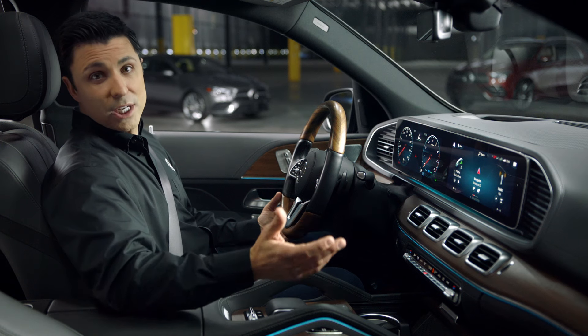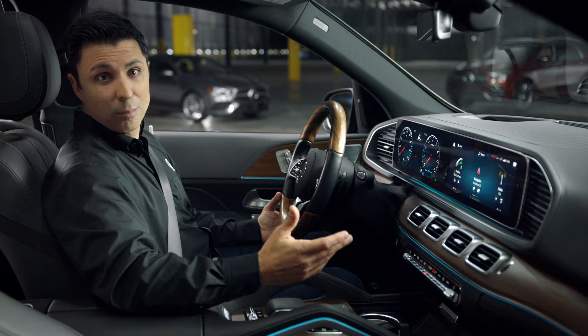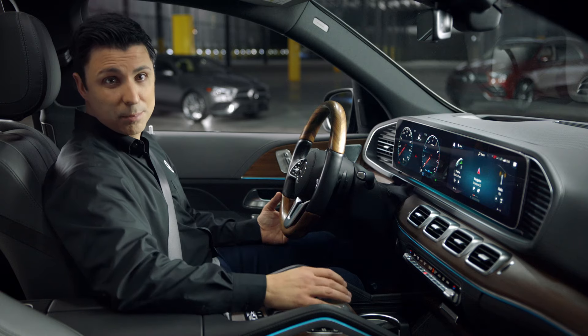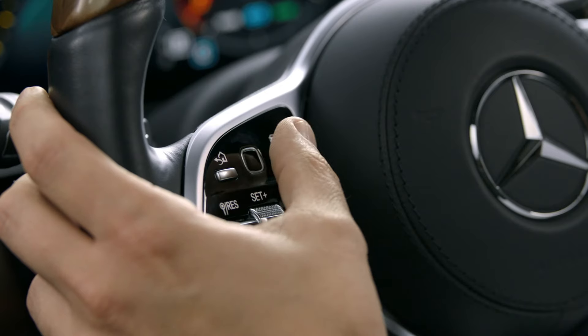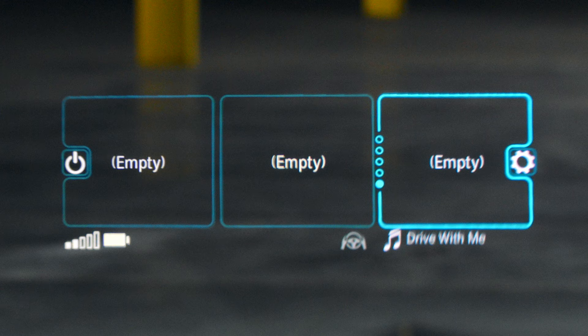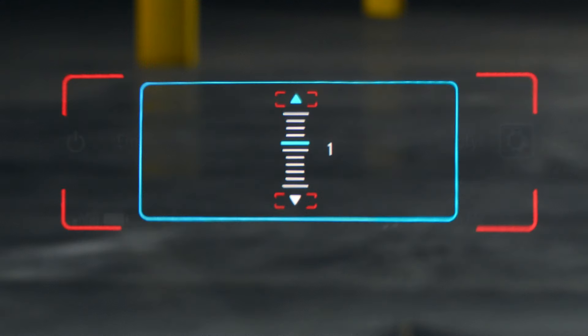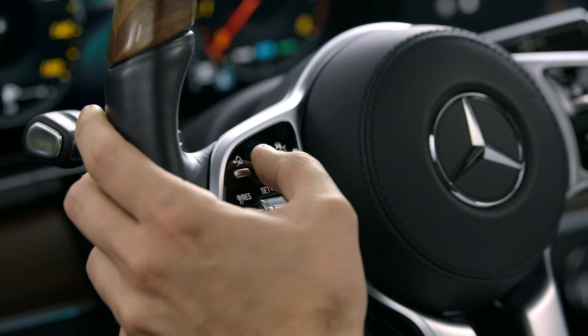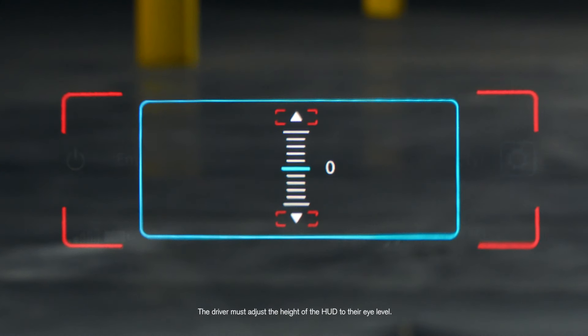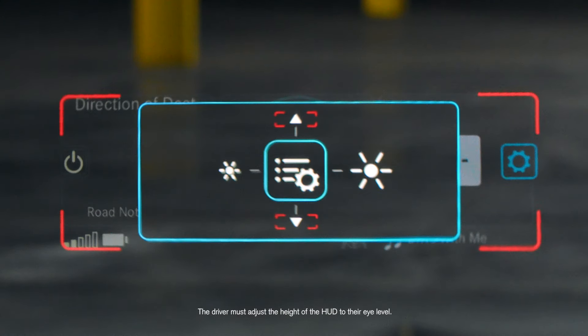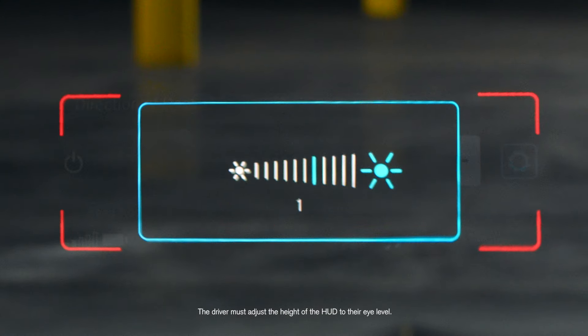If you want to adjust the positioning or brightness of the Head-Up Display, select the gear icon to the right. Toggle up and down to find the perfect position. Swipe left or right to adjust the brightness.